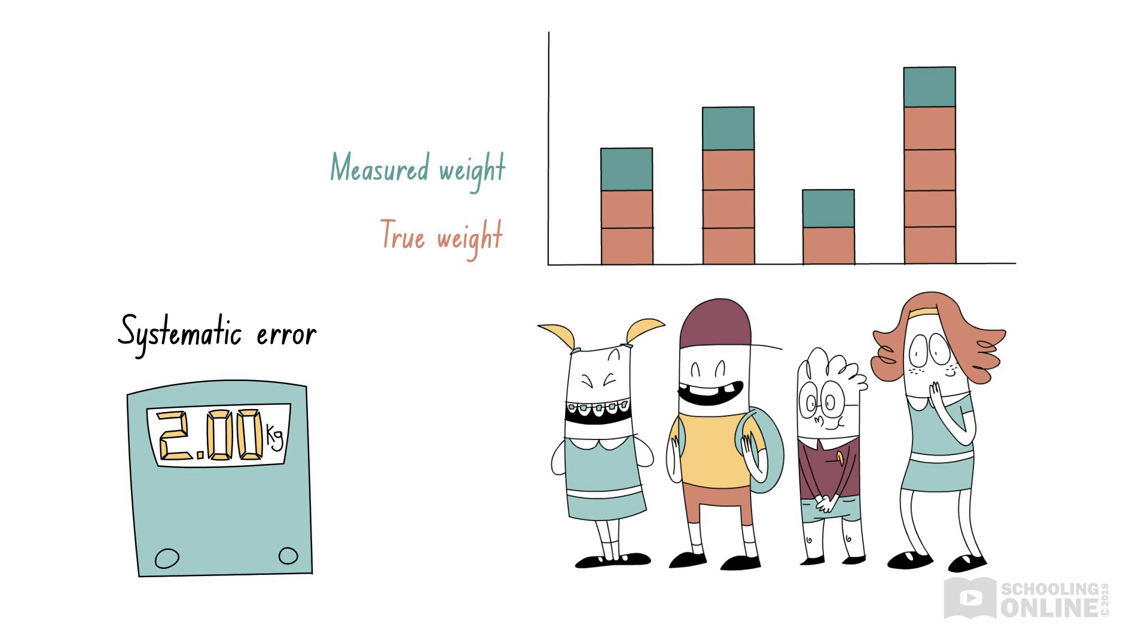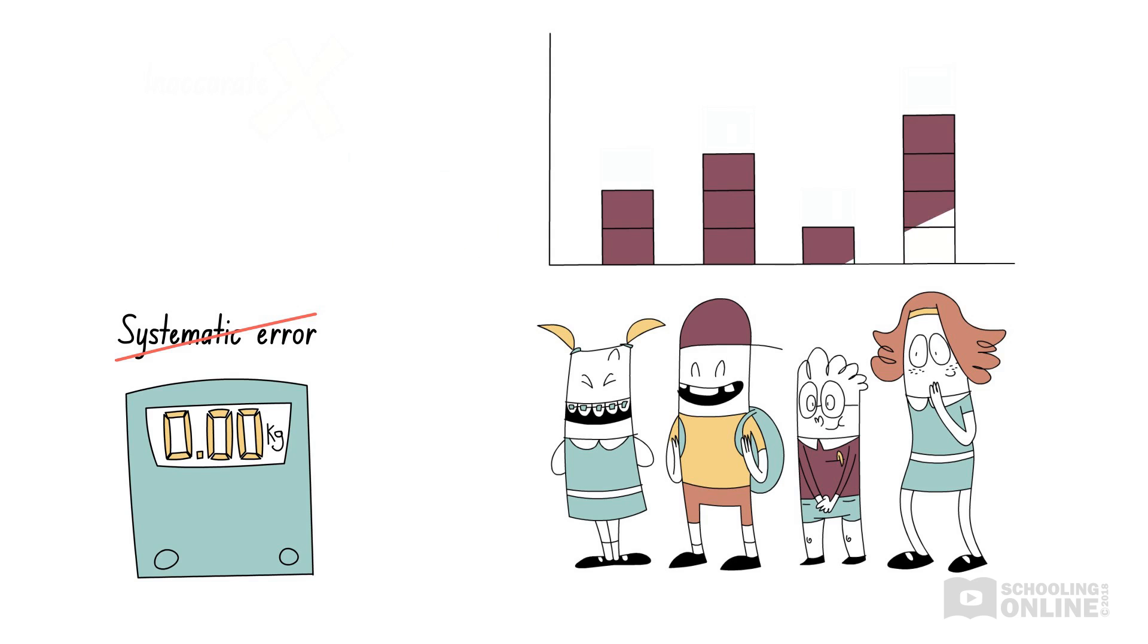Your results will show that everyone is 2 kilograms heavier than the true value of their weight. This systematic error exists because there is a problem with the instrument. The scales aren't starting at 0 kilograms, so of course they aren't going to read the correct weight. As a result, there is a repeated error that causes everyone to appear heavier. If we reset the scales so that they start at 0, we can remove this systematic error and everyone will get the correct weight again.